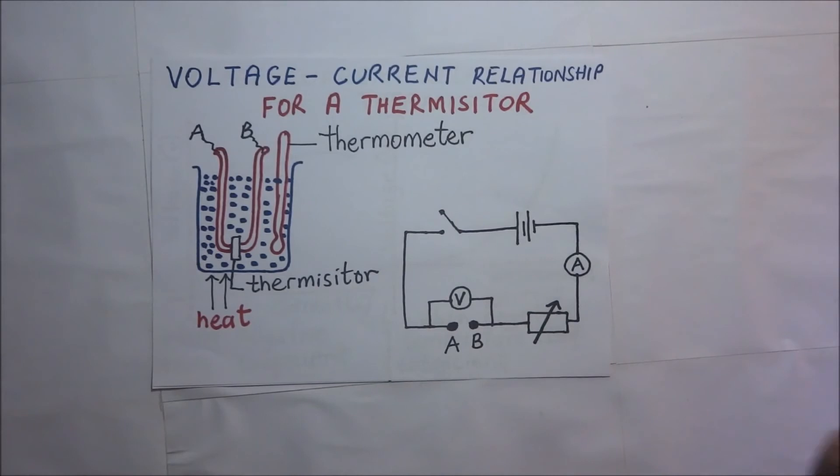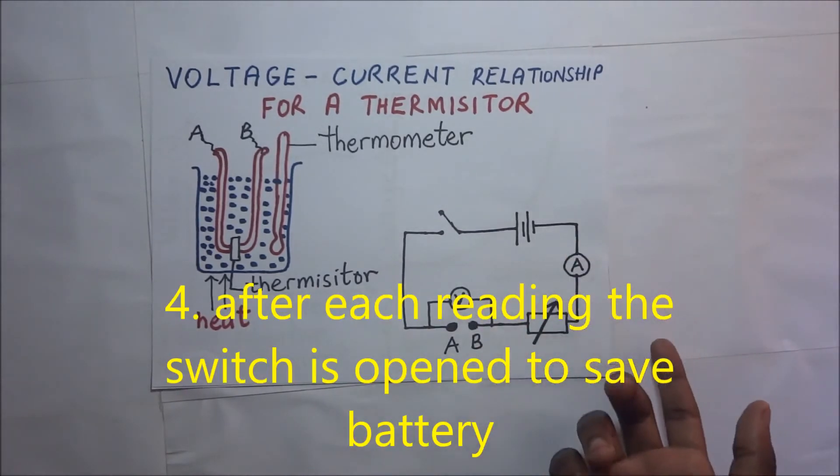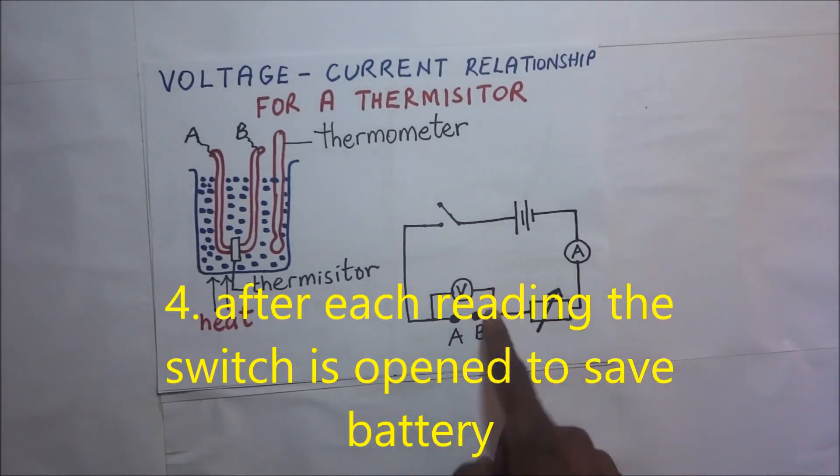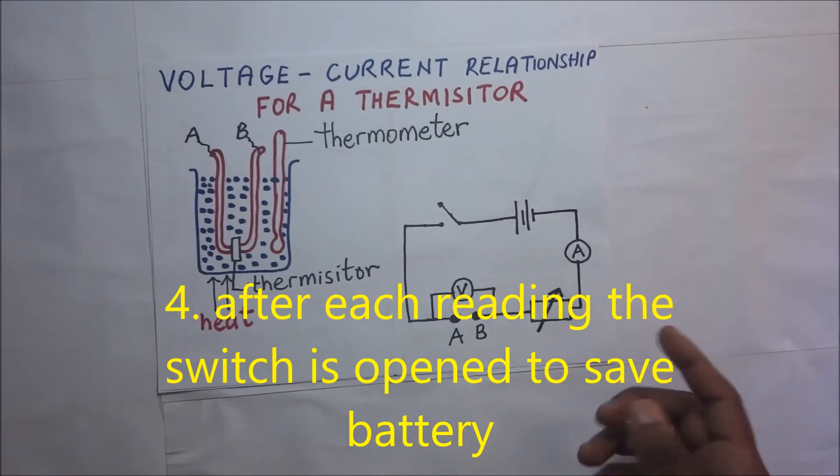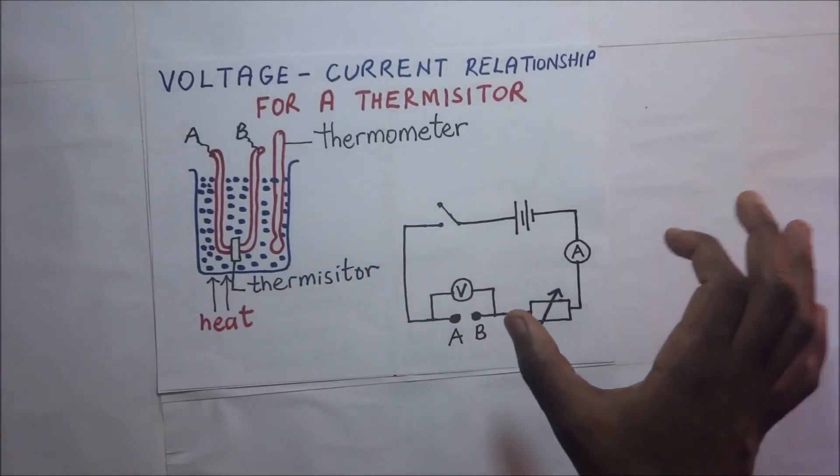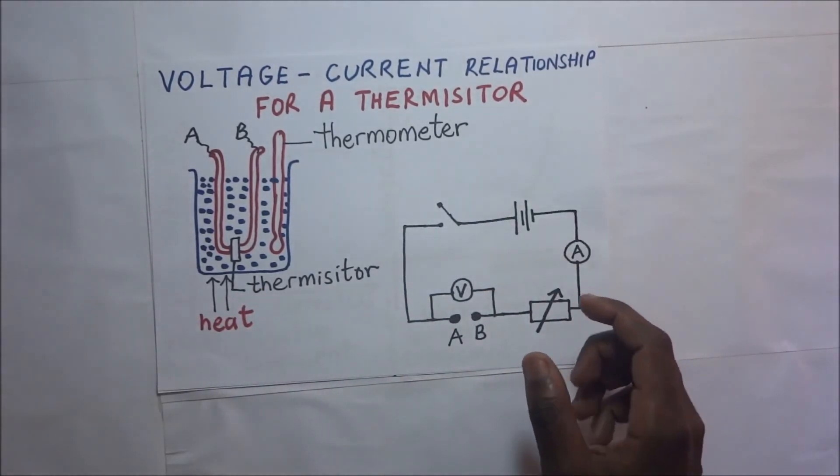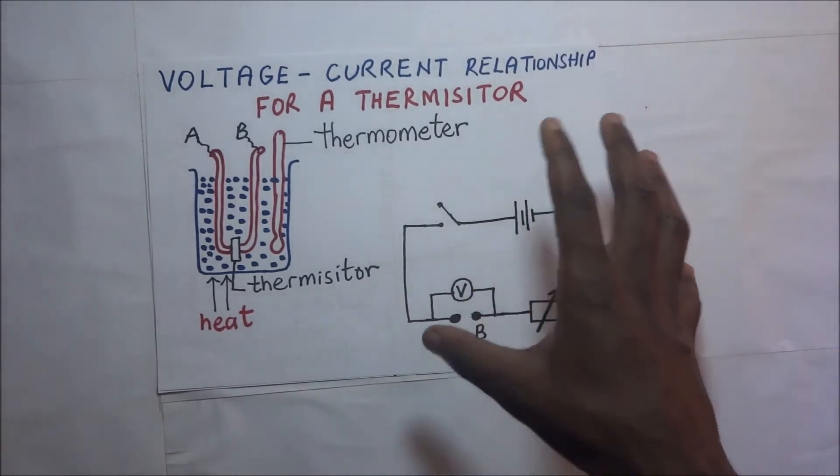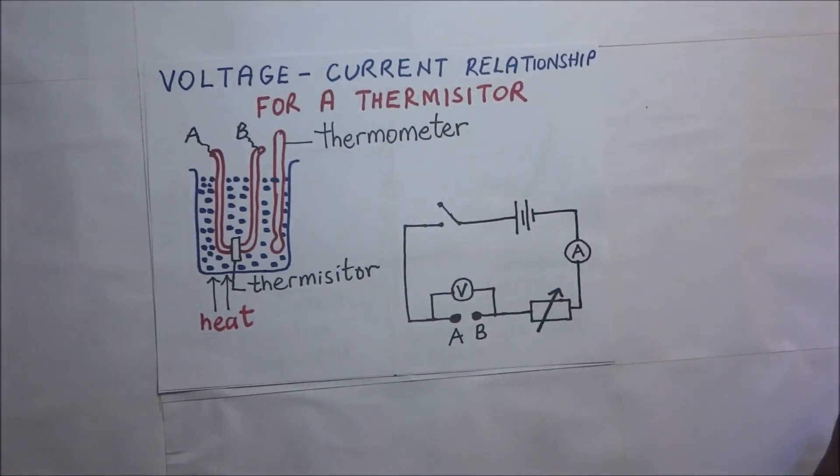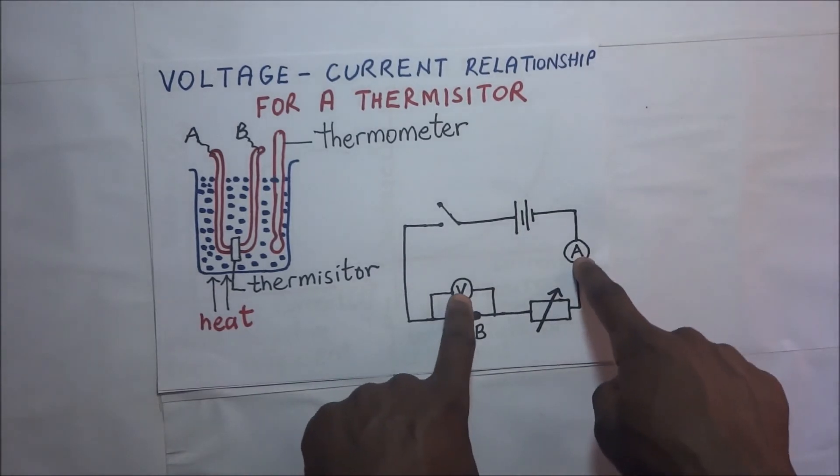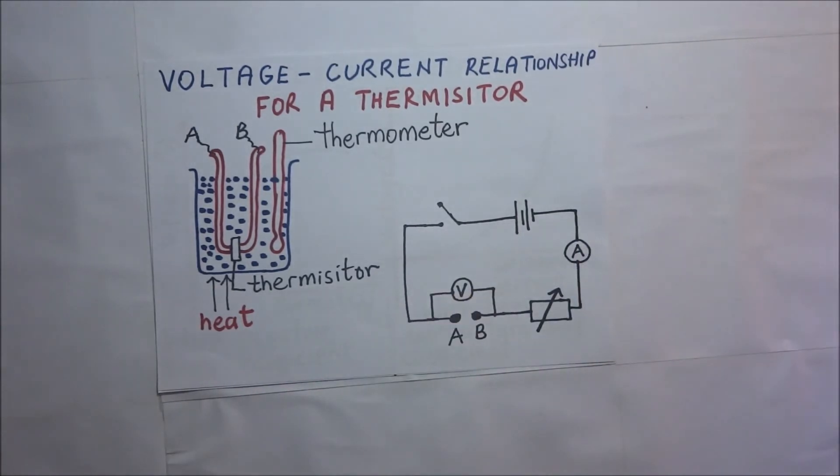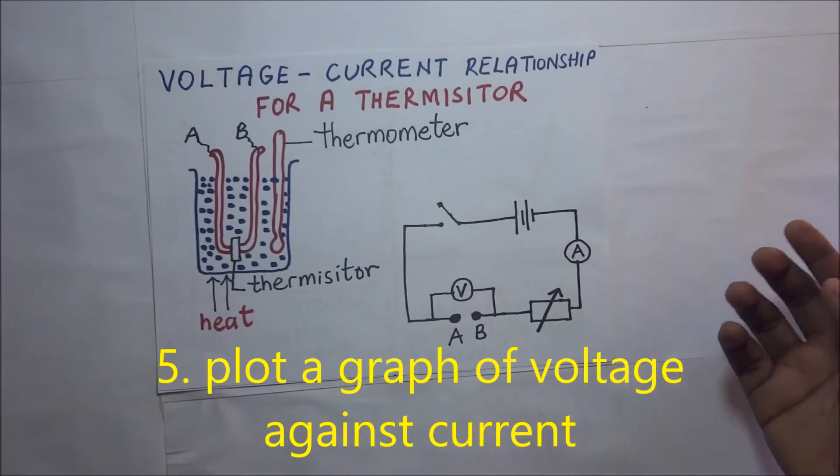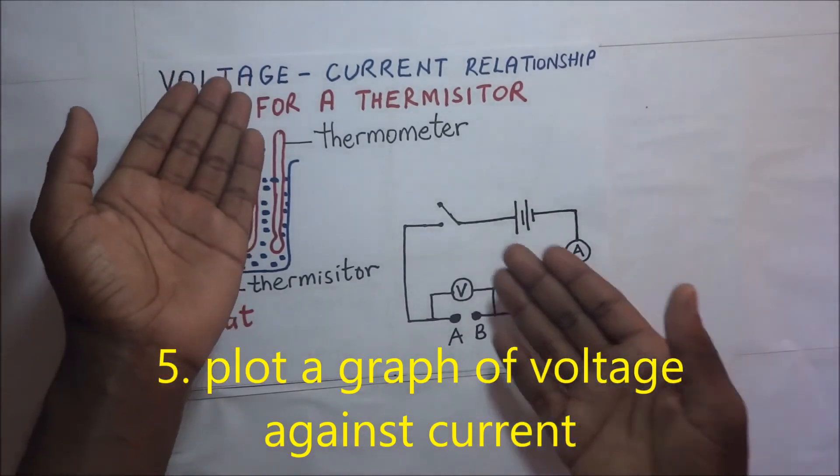After each reading, the switch is opened to save the battery. Every after reading, you open the switch to save battery. After recording your values of V and A in a suitable table, then you plot a graph of voltage against current.